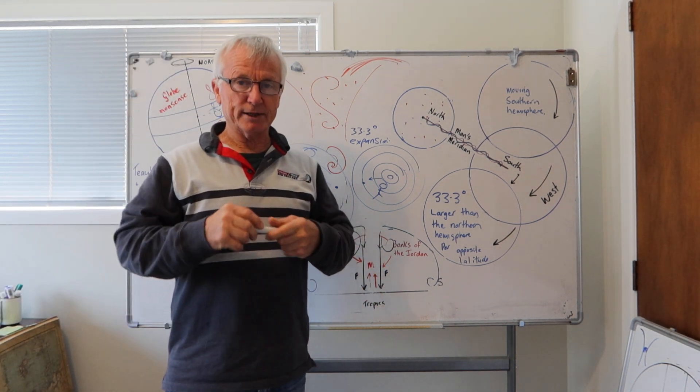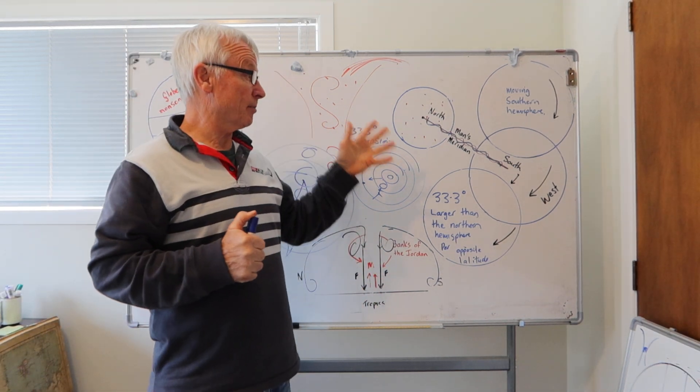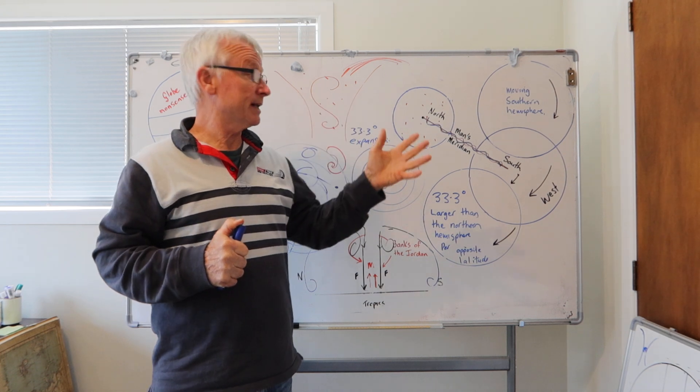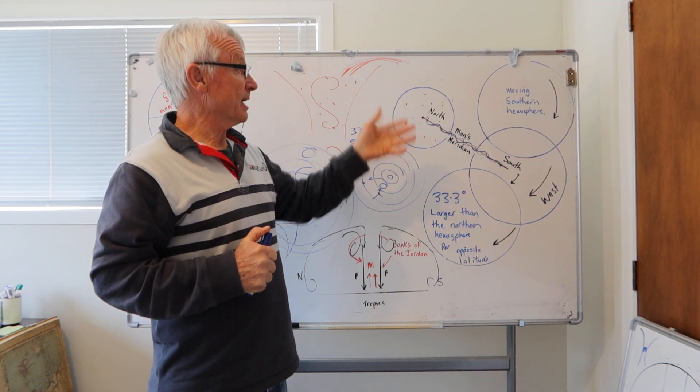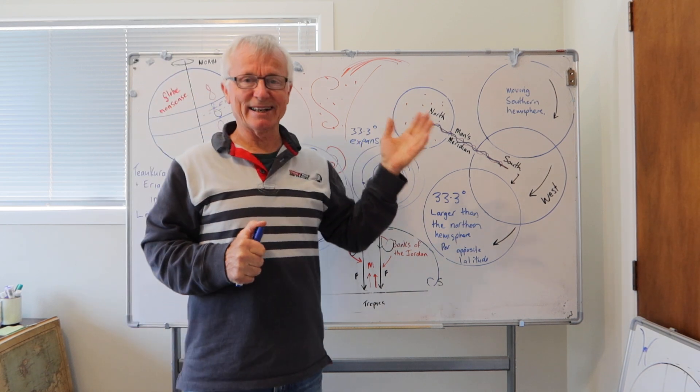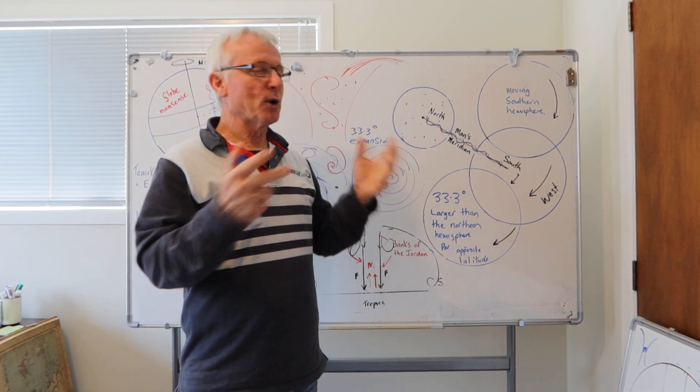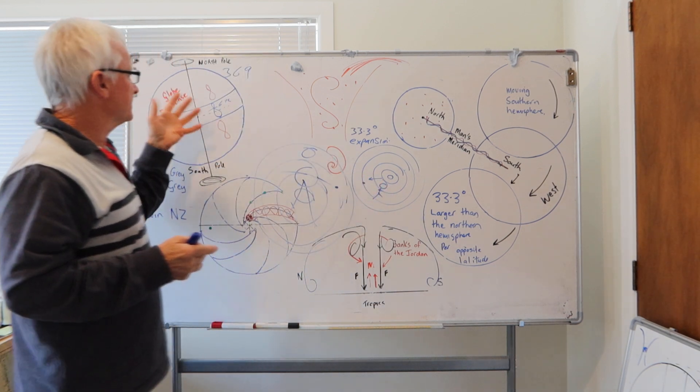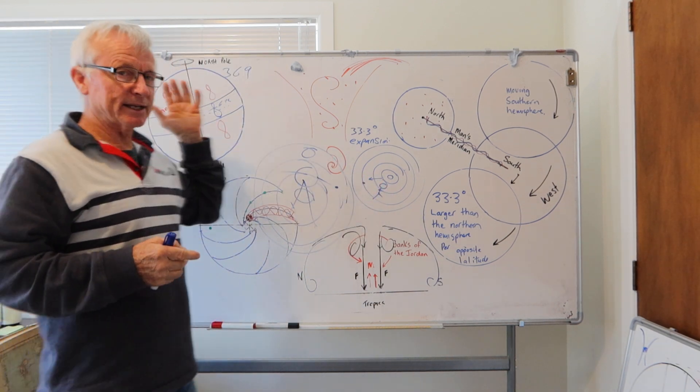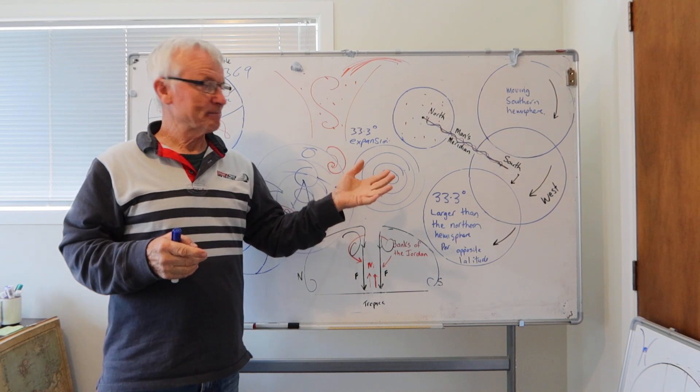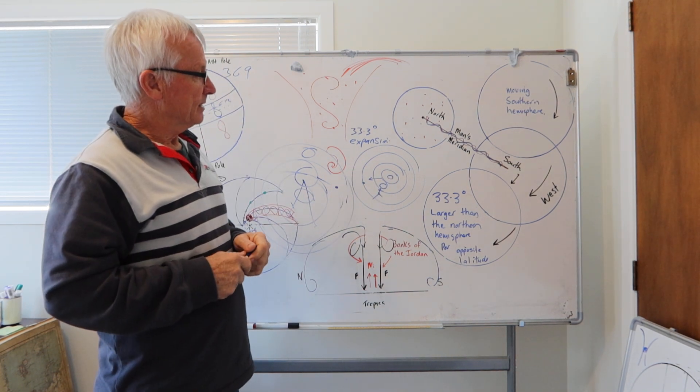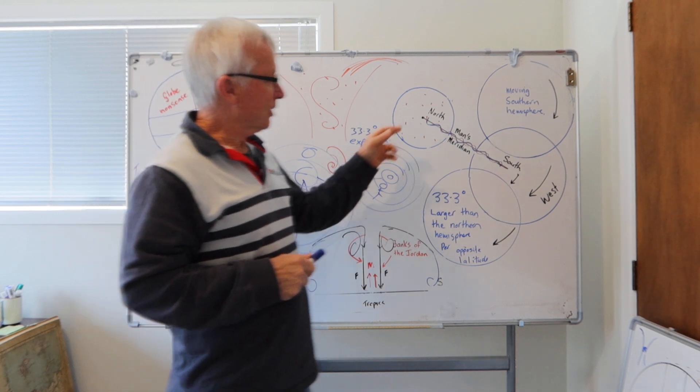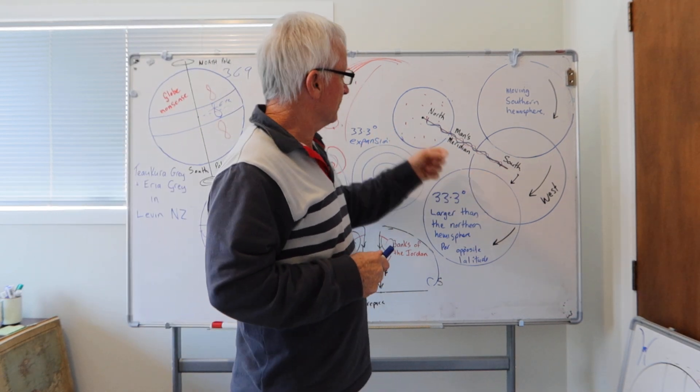People need to get their head around that if they want to understand the flat Earth. It's complicated. It's probably why your elites, Freemasons, don't talk about it. It's a bit complicated. They just come up with the ball idea, but the ball is only a coordinate system. It's nothing to do with reality.